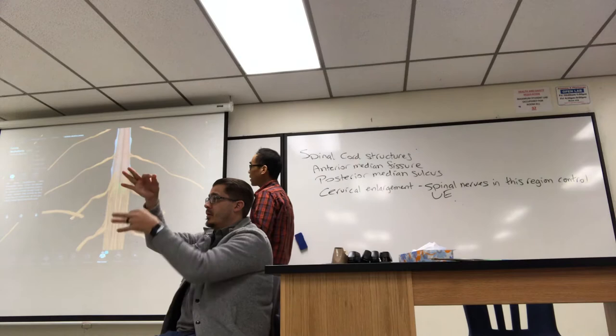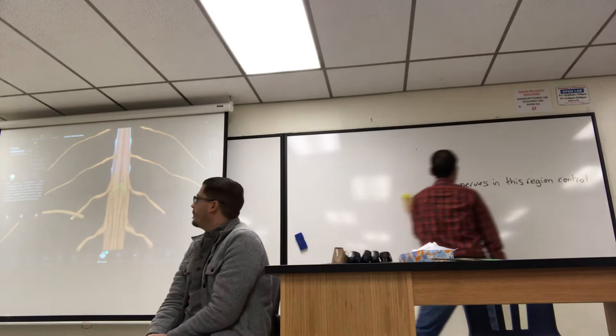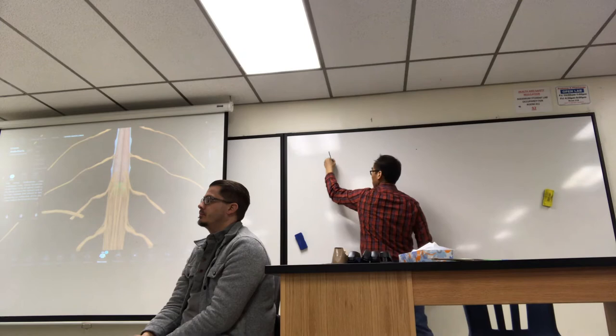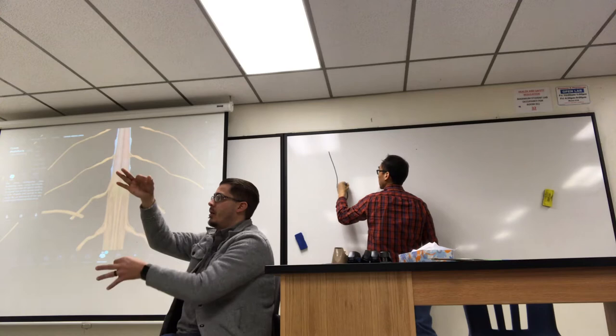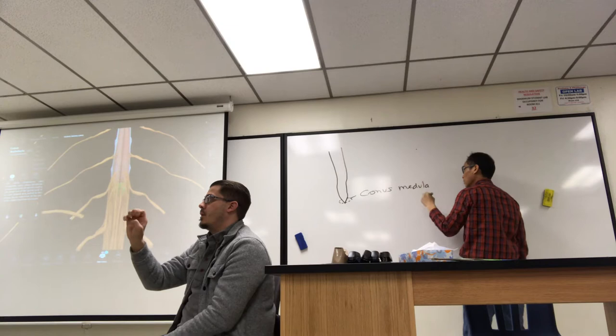The cone tip of the spinal cord has a name: it is called the conus medullaris, referring to the end of the spinal cord. The end of the spinal cord is slightly enlarged but has a cone tip shape, and that cone tip is the conus medullaris.